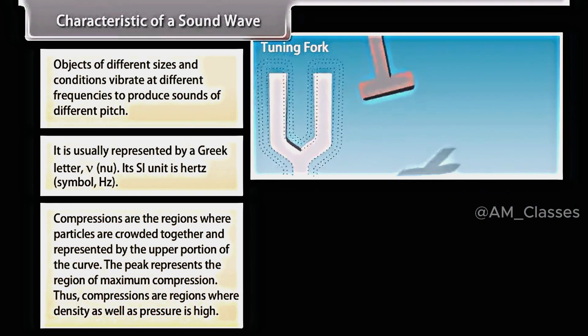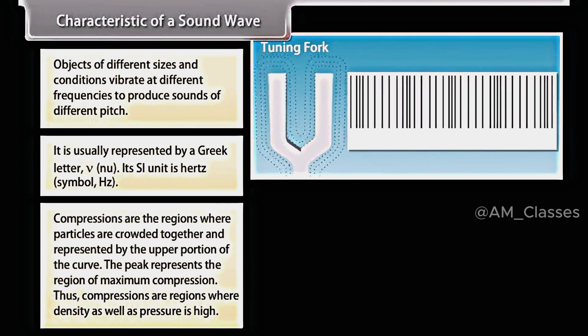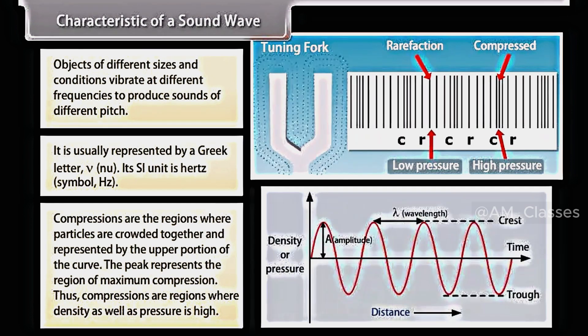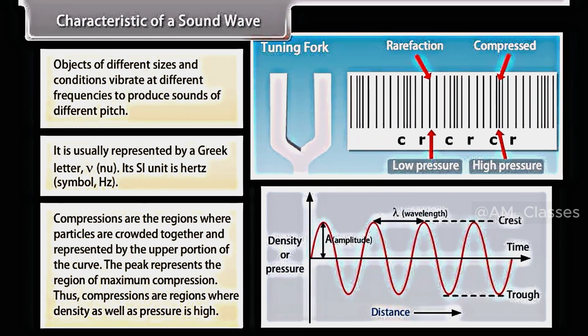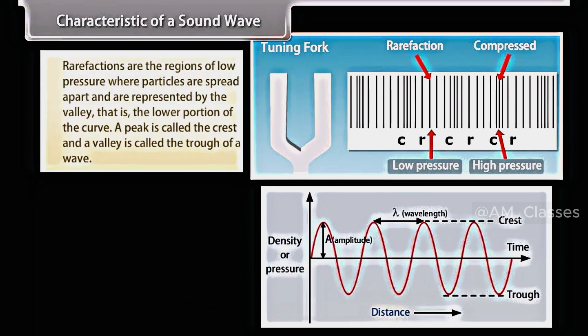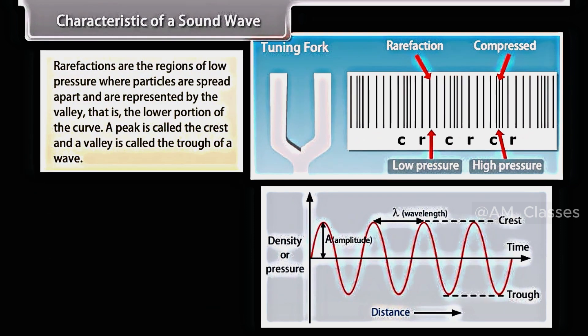We know that compressions are the regions where particles are crowded together and represented by the upper portion of the curve. The peak represents the region of maximum compression. Thus, compressions are regions where density as well as pressure is high. Rarefactions are the regions of low pressure where particles are spread apart and are represented by the valley, that is, the lower portion of the curve.